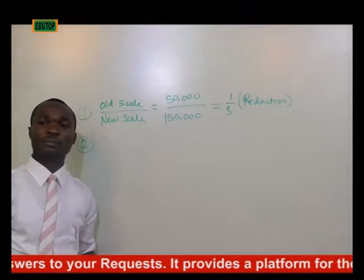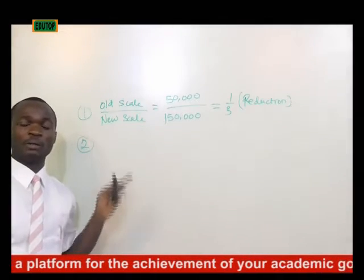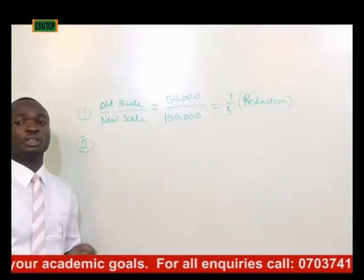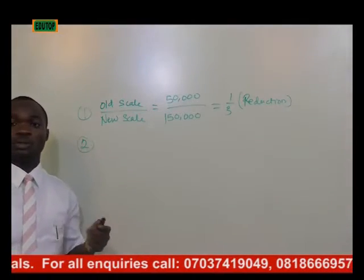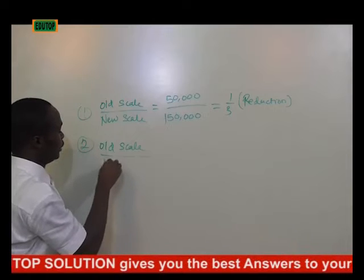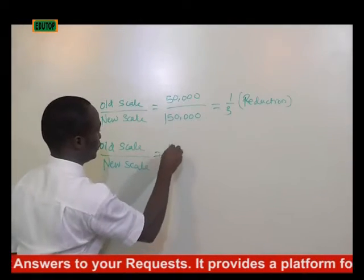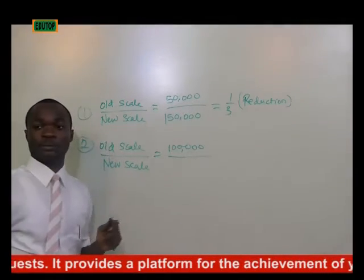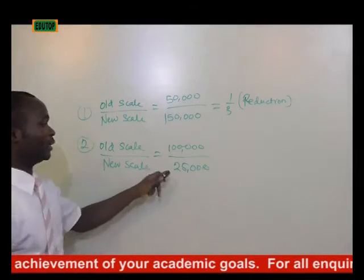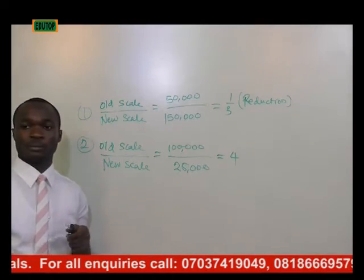If you are given another question in this form: 'Study the map extract on scale 1 is to 100,000 and draw an outline of the area to a scale of 1 is to 25,000' — again we have two scales. The old scale is 100,000 and the new scale is 25,000. If you divide this, what you get is a whole number, which is 4.